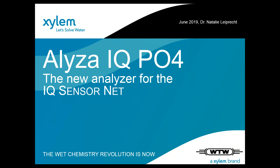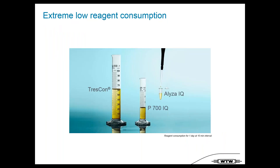Now for one of the big topics today: new technology. Since July, we have the ELISA IQ PO4 available — a new analyzer for IQSensorNet. We can truly say the wet chemistry revolution is now. The key point is reagent consumption. Compared to TRESCON and the previous P700 IQ phosphate analyzer, ELISA needs less than one milliliter of reagent per day.